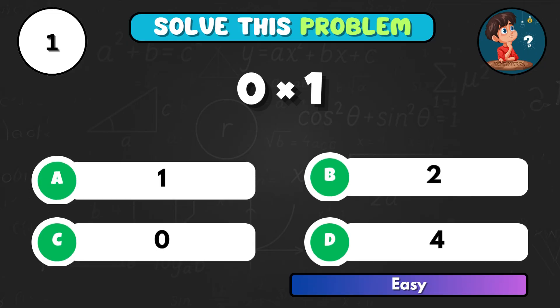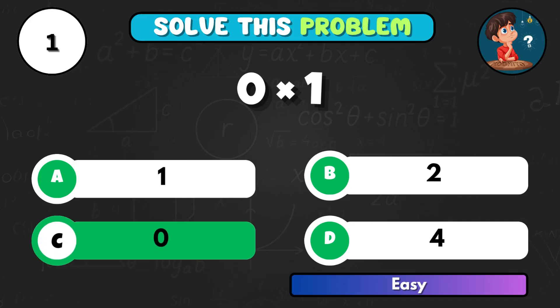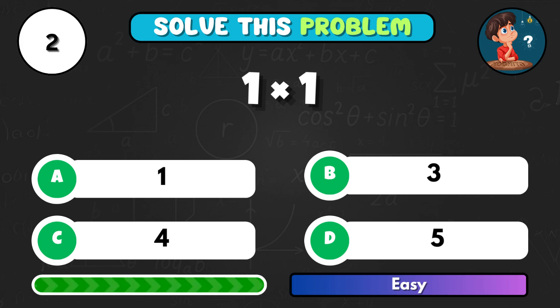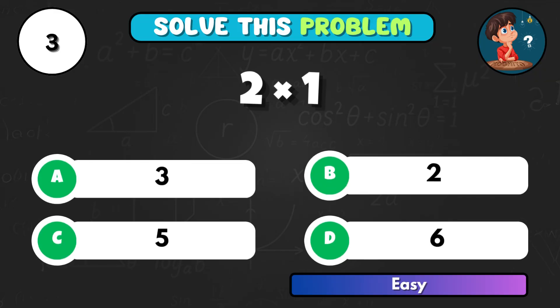Let's start off simple. What is 0 times 1? The correct choice is C and the answer is 0. 1 times 1, what does that make? Option A and that equals 1. If you multiply 2 by 1, what do you get? That's B, giving 2.